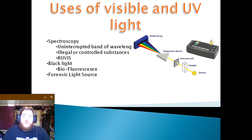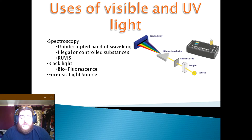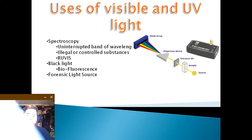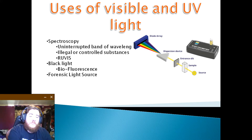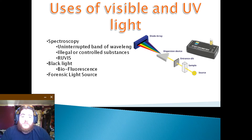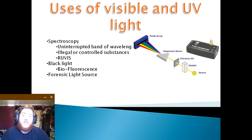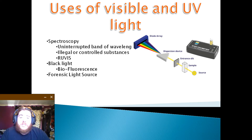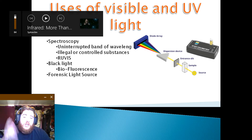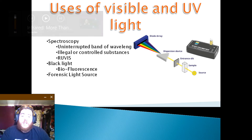We then have a forensic light source. While we have already mentioned spectroscopy and blacklight, it does need to be mentioned that a forensic light source is capable of doing a lot more. A forensic light source is made up of a powerful lamp containing ultraviolet, visible and infrared components of light. It then filters down the light into individual wavelengths that enhance the visualisation of evidence by light interaction techniques, including fluorescence, absorption and oblique lighting.